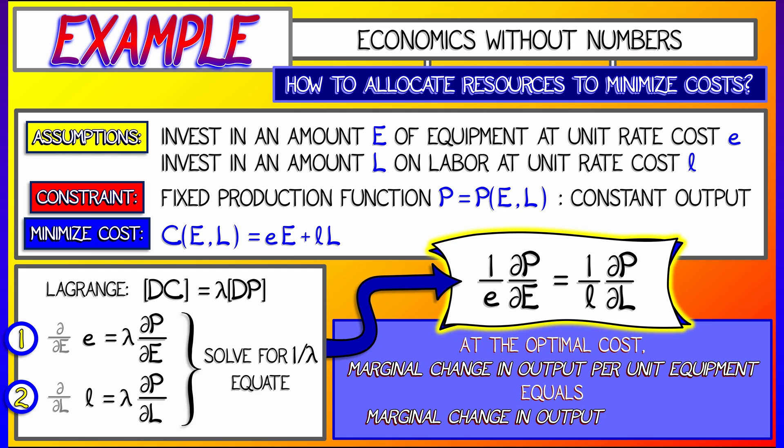What this means is that when you're at the optimal cost, the marginal change in output per unit equipment equals the marginal change in output per unit labor. That's how you would interpret this formula economically.